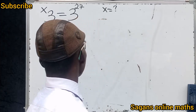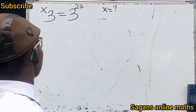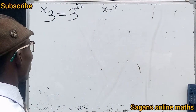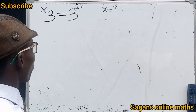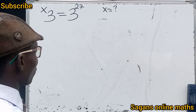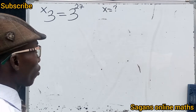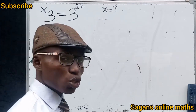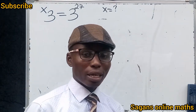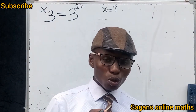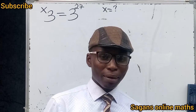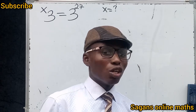Look at what we are given: 3 tetration x equals 3 raised to the power of 27. We are asked to find the value of s. Now, most students make a serious mistake about this.